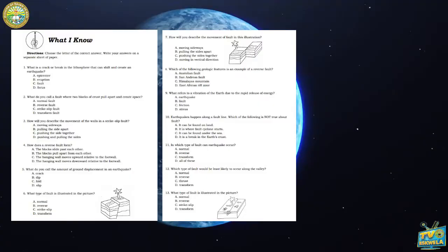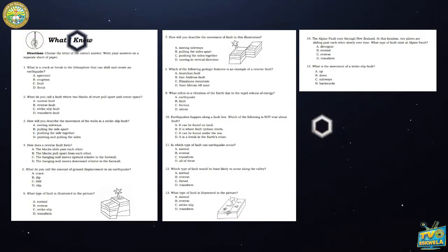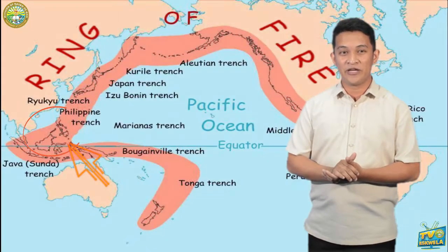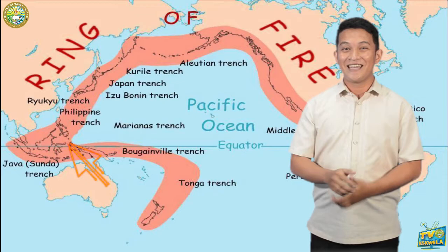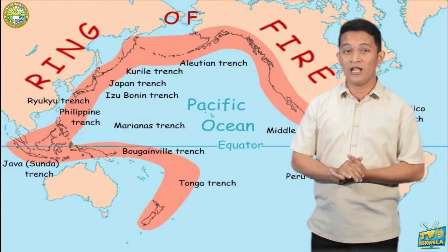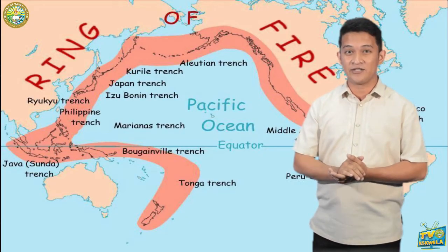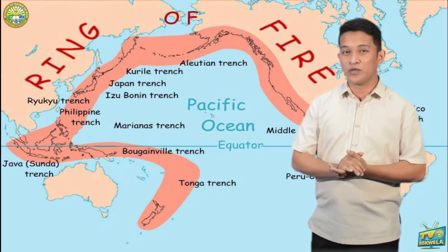You can answer the rest of the pre-test questions at your own pace. Now, if you can recall from Science 7, our country, the Philippines, is located at the Pacific Ring of Fire. The Pacific Ring of Fire is a path along the Pacific Ocean characterized by active volcanoes and frequent earthquakes.